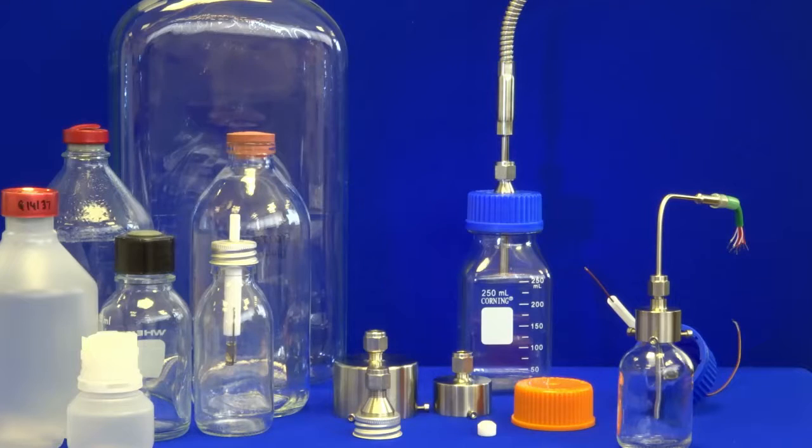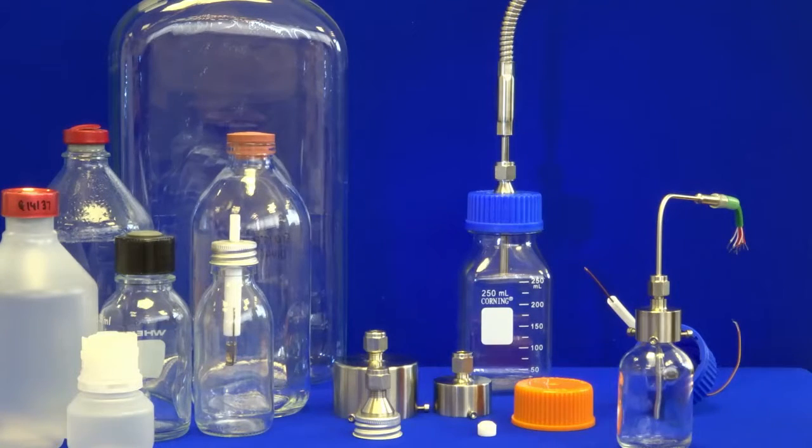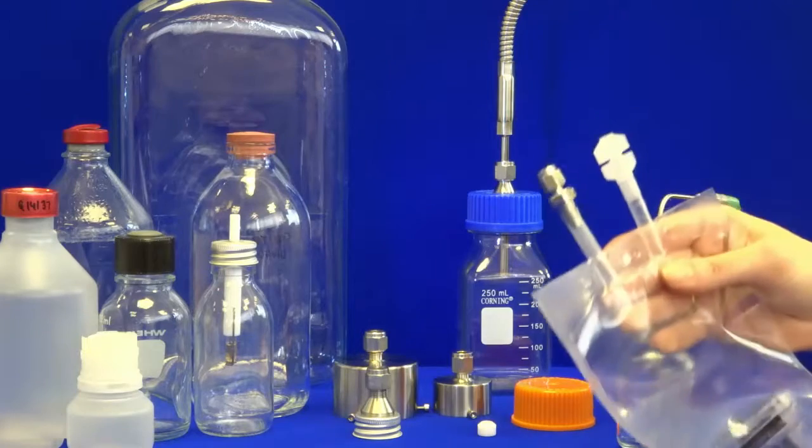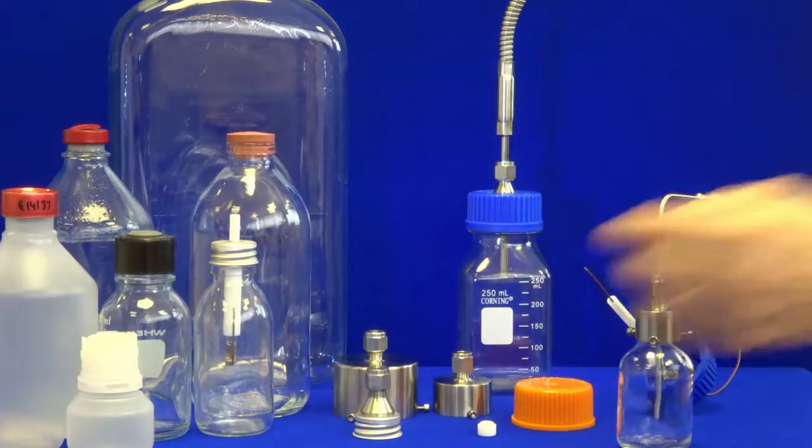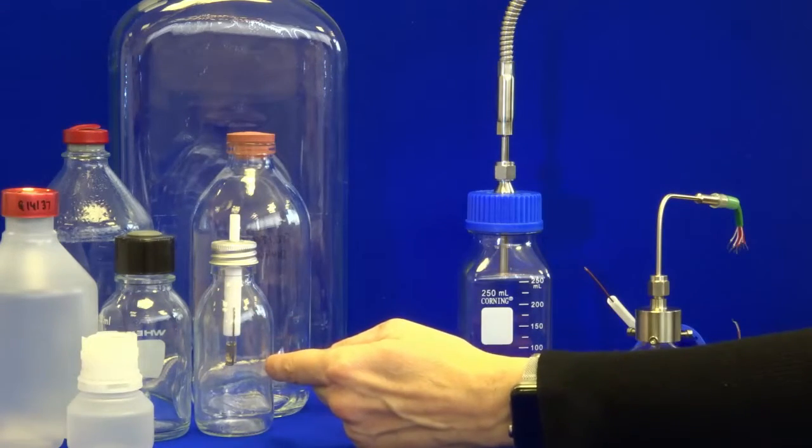All assemblies manufactured by Thermal Detection are chemically etched with a discrete job number for traceability. We also manufacture fittings that fit bags and also ampoule holders.